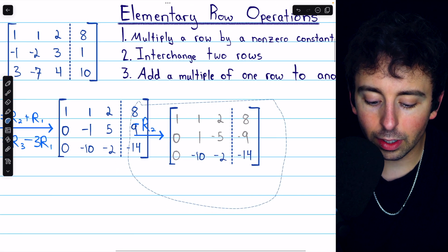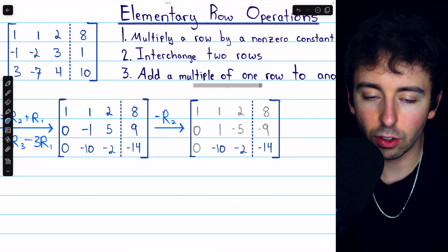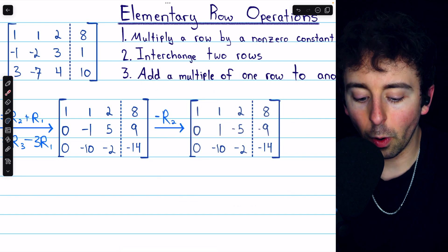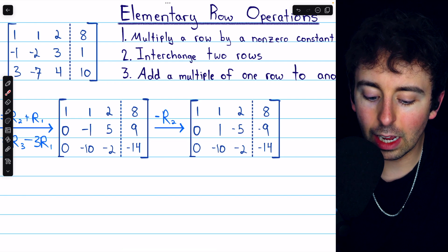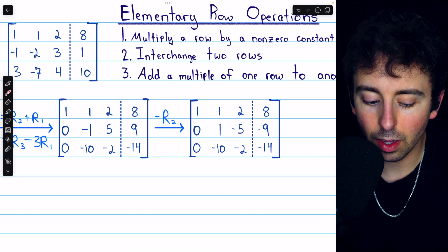So the next thing we'll do is multiply row 2 by negative 1 in order to turn that negative 1 into a positive 1. Of course, this also makes the 5 negative and the 9 negative.